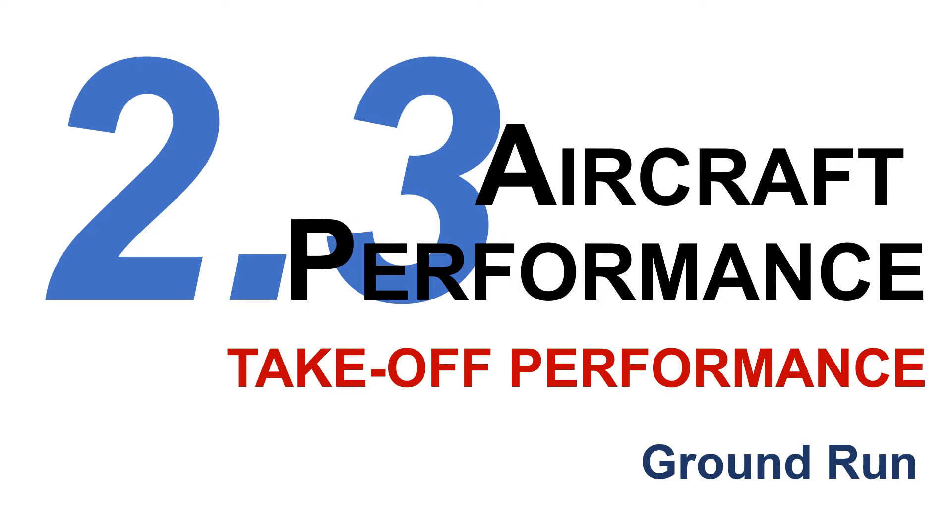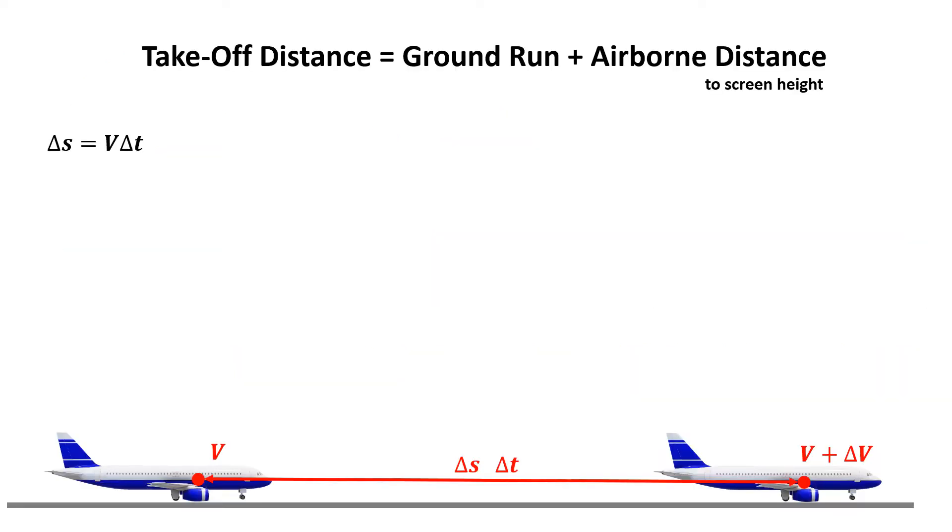The third part of the takeoff performance is ground run, and in this section we will calculate the ground run distance. We know the takeoff distance in total is comprised of the ground run distance and airborne distance. Now let's focus on the ground run distance. If we are looking at the aircraft in the bottom, it's moved from one station to the other within a time separation of delta t and the distance is delta s.